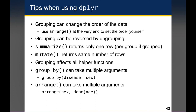Remember: summarize returns only one row per group if the data is grouped, while mutate always returns the same number of rows as the original data frame. Also, grouping affects all helper functions — if your data is grouped and you use a slice function, that slice works separately on each group, not at the level of the entire data frame.